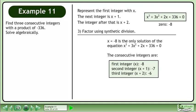The consecutive integers are shown. The first integer, x, is negative 8. The next integer, x + 1, is negative 7. The final integer, x + 2, is negative 6.